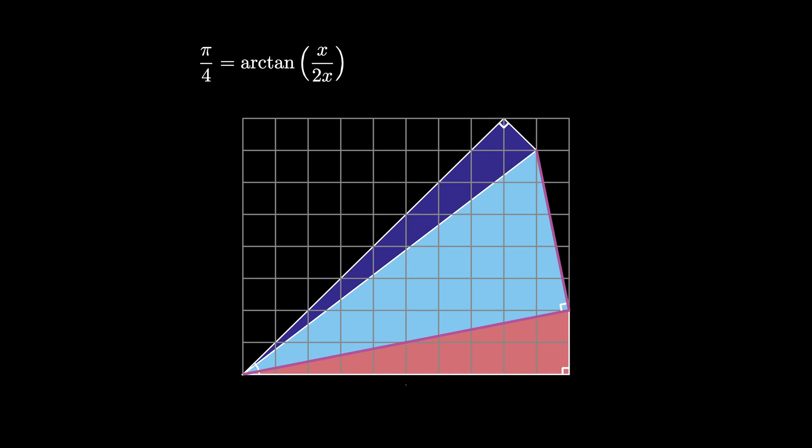For the bottom red triangle, we see that this triangle has a side length of 10 and another side length of 2. Therefore, the small angle in the red triangle is given by the arctangent of 2 over 10.